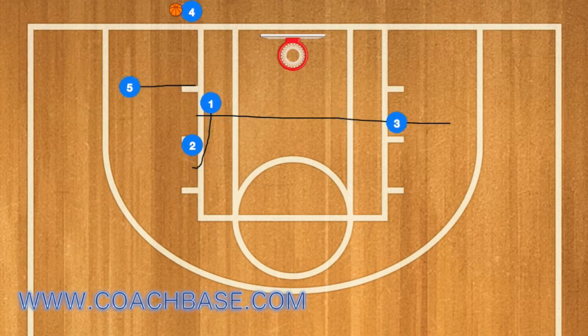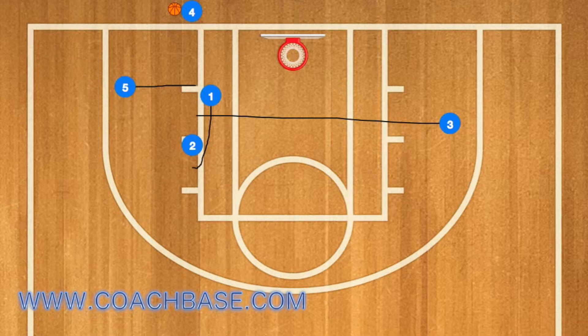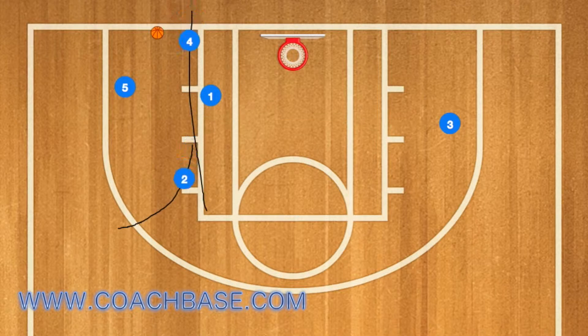First, player 5 will pop out to the left wing, 3 will go out to the right wing, and 1 will use 2 as a screen and pop down to the baseline.